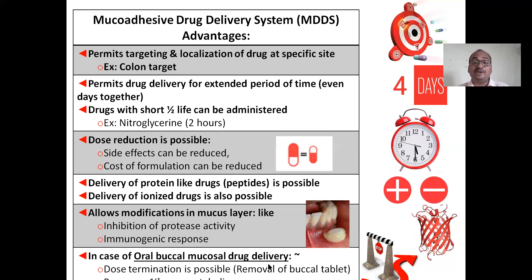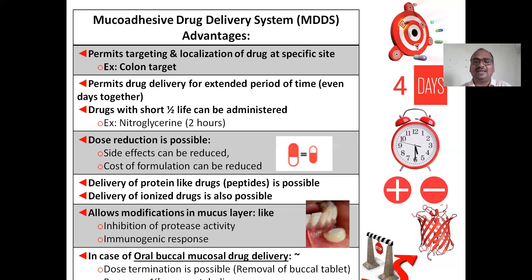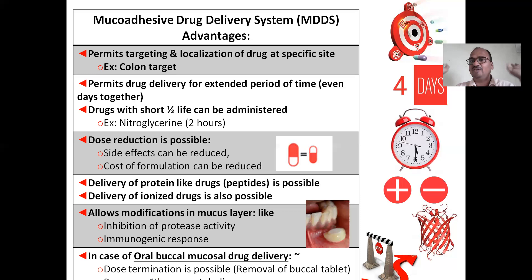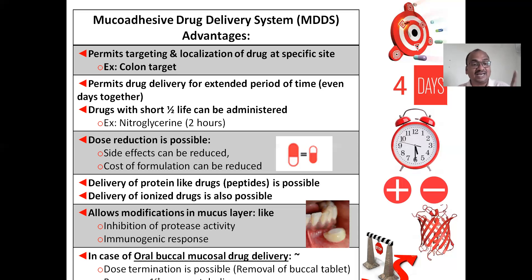In the case of oral or buccal mucosal drug delivery specifically, dose termination is possible. Whenever you don't want the drug anymore — say the disease is cured — you can immediately remove the buccal tablet. If you swallow a conventional tablet, dose termination is not possible. So removal of the buccal tablet allows dose termination. Additionally, buccal and anal mucosal routes bypass first-pass metabolism. These last advantages are restricted to oral mucosal and anal mucosal delivery, not the entire GIT.